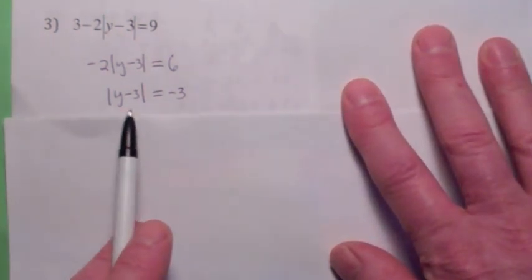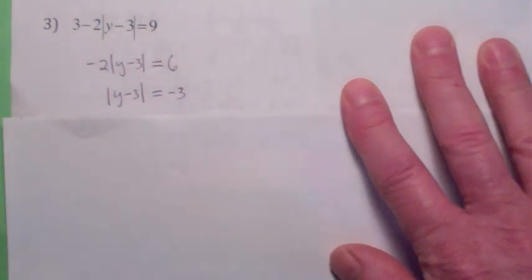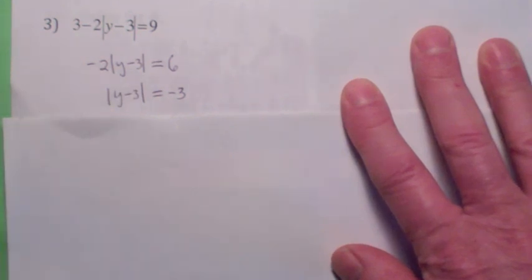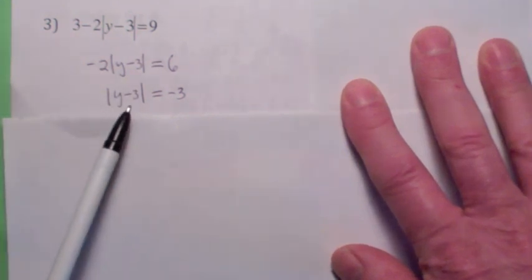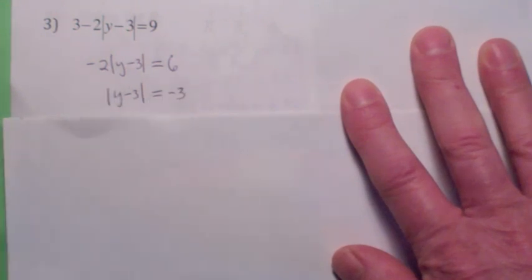Now at this point, you should realize this equation has no solution. Do you know why? It has no solution because the absolute value of something, remember, is its distance away from zero. How can something be a distance away from zero that is negative 3 units? It's impossible. Absolute value of something can never be less than zero. It could equal zero, but it could never be negative.